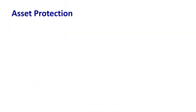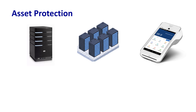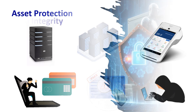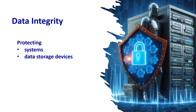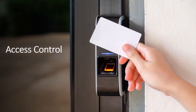Asset protection: think servers, data centers, and point-of-sale terminals. Without physical security, these assets become vulnerable to theft, tampering, or unauthorized access. Data integrity: protecting systems and data storage devices ensures data remains intact, shielding it from physical damage or manipulation. Access control: who can enter and interact with critical infrastructure? Physical security answers this question, preventing unauthorized access that could lead to data breaches.